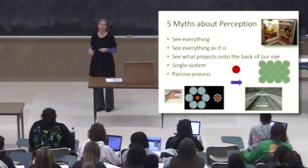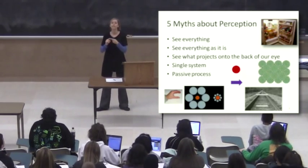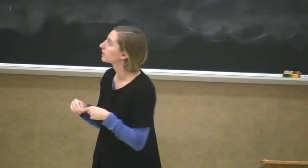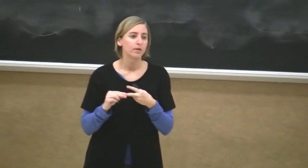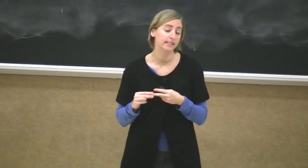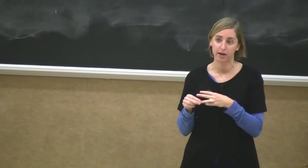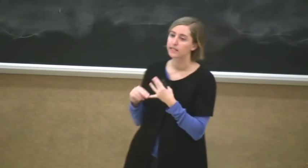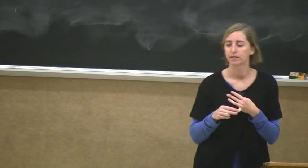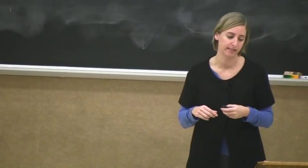So again, perception, we're not seeing everything. It's selective. We're only seeing the things that we need. We're not seeing things necessarily as they are. We're certainly not seeing the way things project on the back of our eyes. It's not a singular system. It contains multiple systems. And it's an active process.